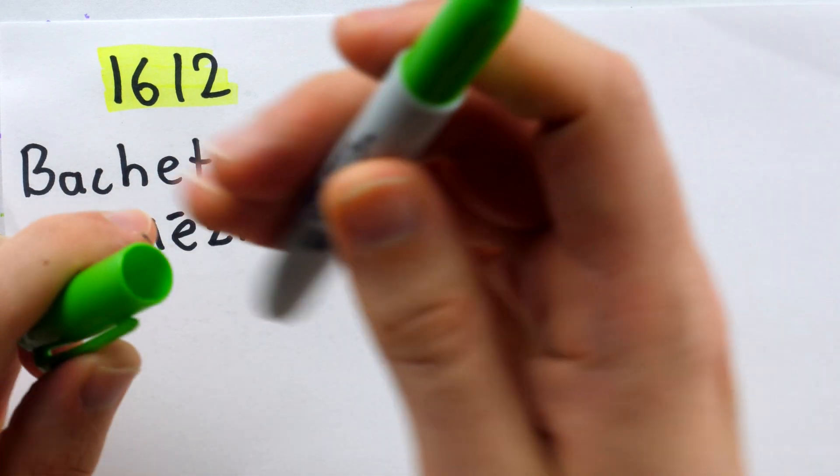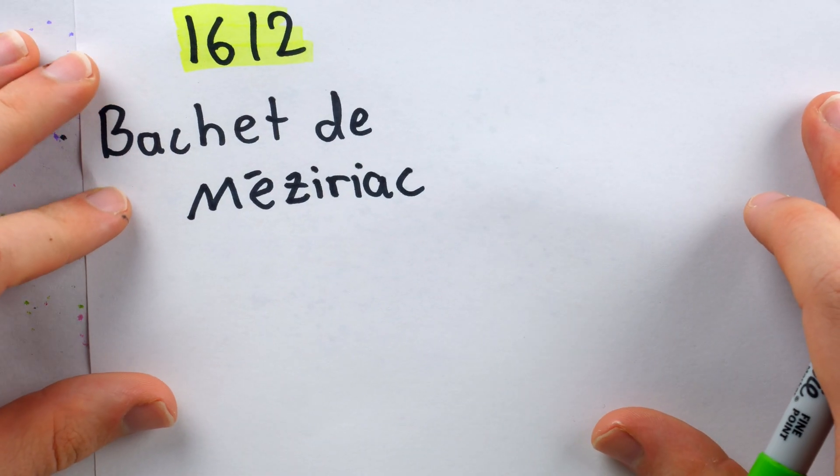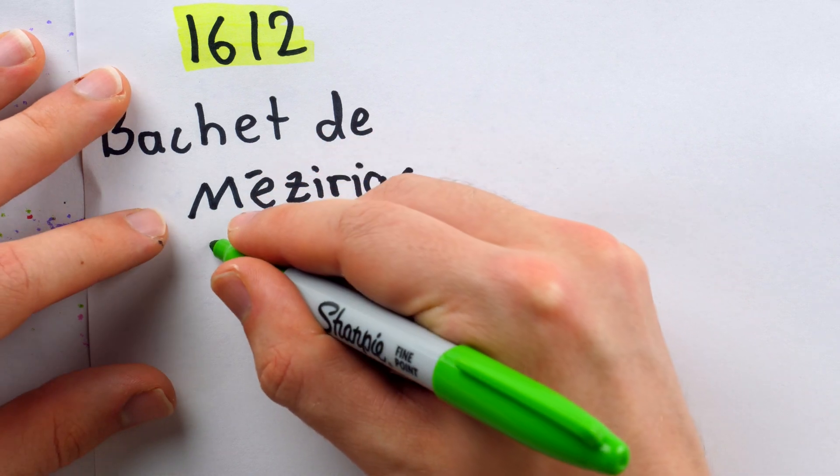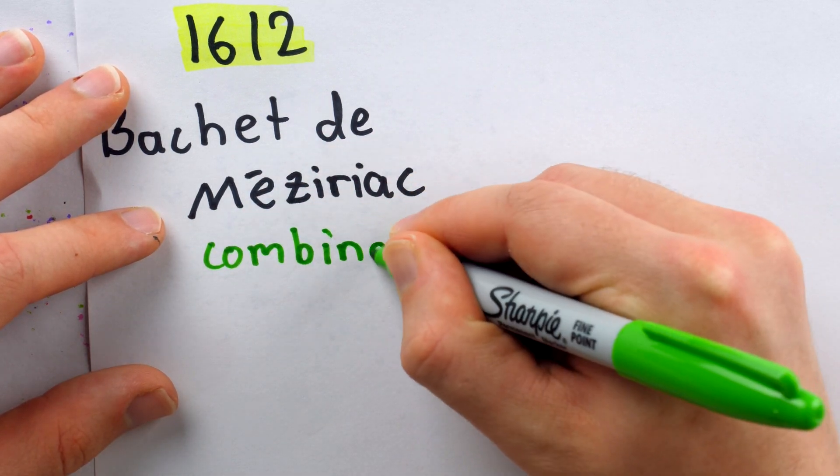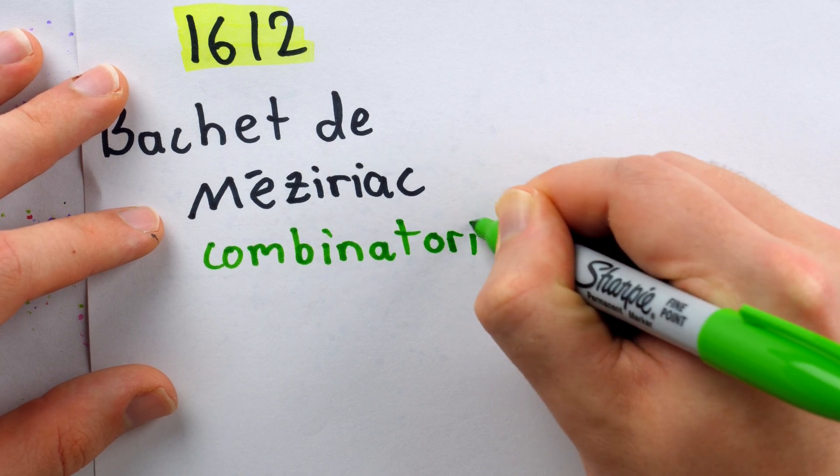Like I said, this game we're going to look at today was, as far as I can tell, the first example I can find of a mathematical analysis being done and published on some combinatorial game.